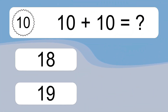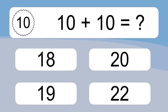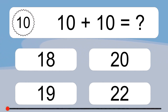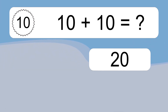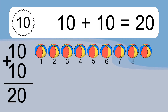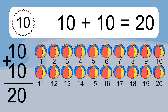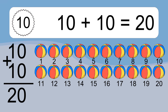10 plus 10 equals what? 10 plus 10 equals 20. Let's count it: 1, 2, 3, 4, 5, 6, 7, 8, 9, 10, 11, 12, 13, 14, 15, 16, 17, 18, 19, 20.